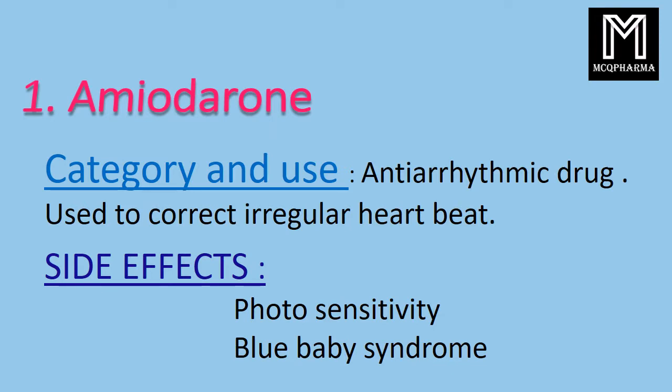First one: amiodarone. Category and use: anti-arrhythmic drug used to correct irregular heart rate. Side effects: photosensitivity, blue-gray skin discoloration (blue baby syndrome).